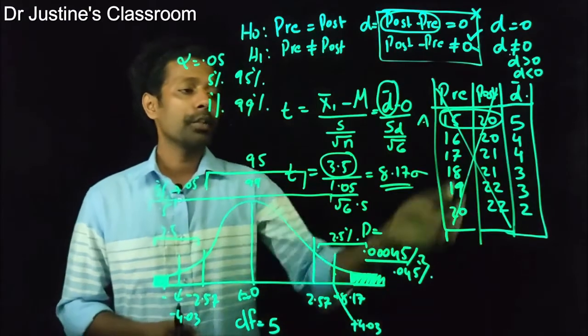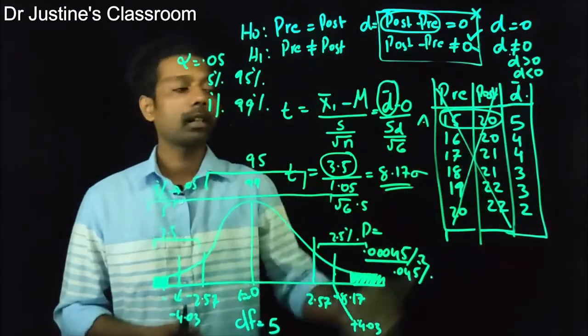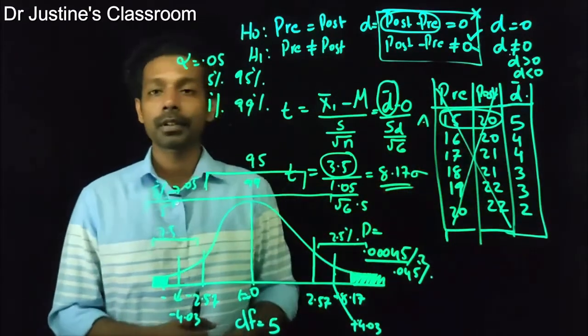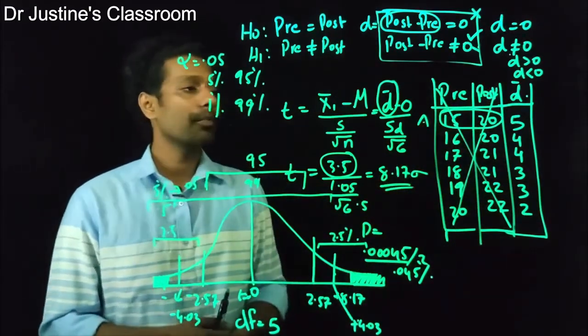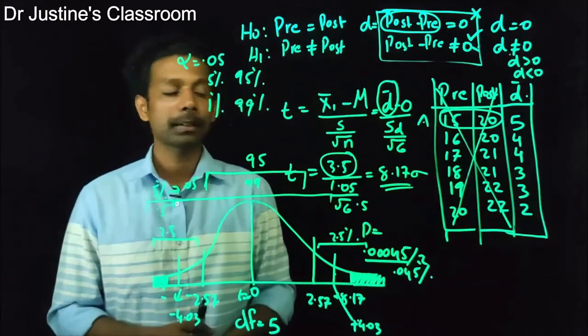There should not be many extreme scores. So the assumptions of paired sample t-test are: normality of the D value, independence of observations within each group, and random selection of subjects.